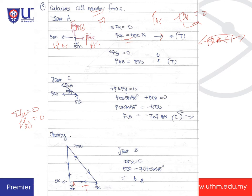Using ΣFy = 0: FAB is assumed positive moving upward, so FAB − 500 = 0, giving FAB = 500 kN upward. Moving upward means it is also in tension. So from A the force moves upward toward B, and from B it moves upward as well to maintain balance. Both FAC = 500 kN and FAB = 500 kN are tensile forces.